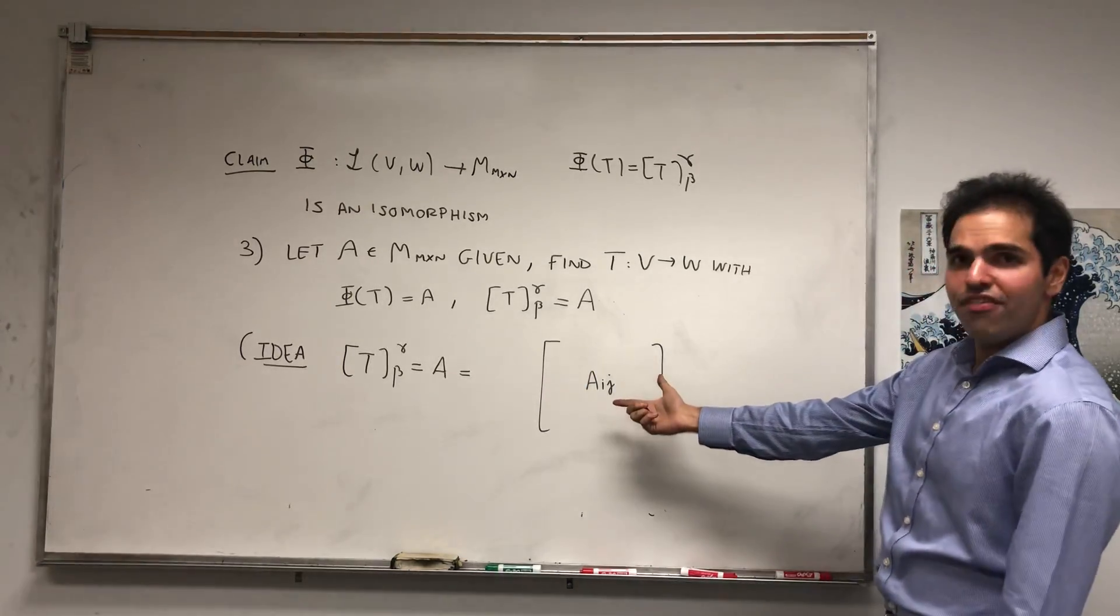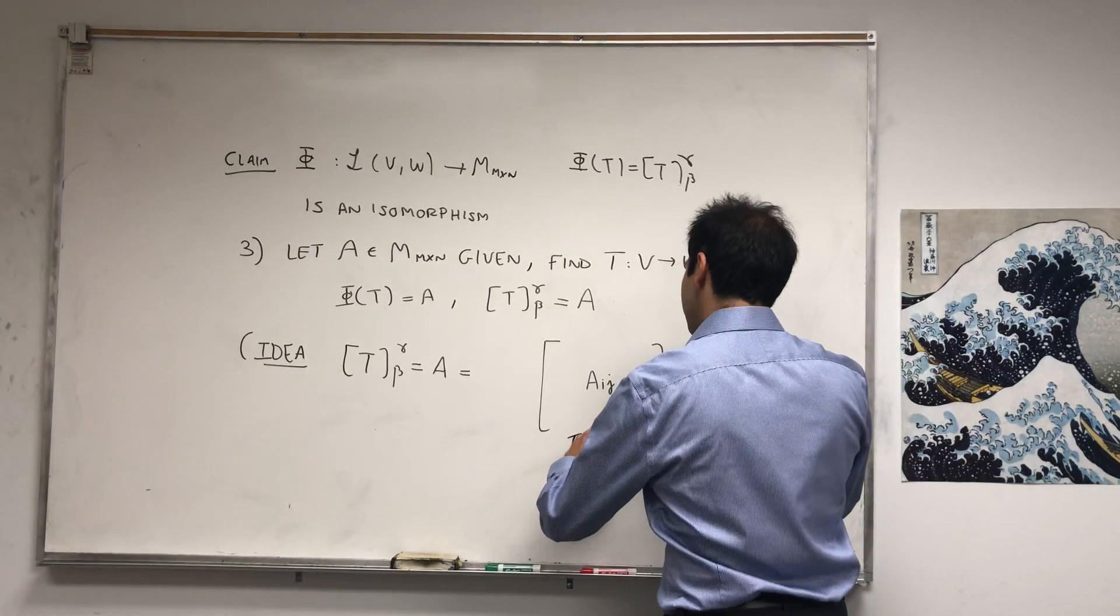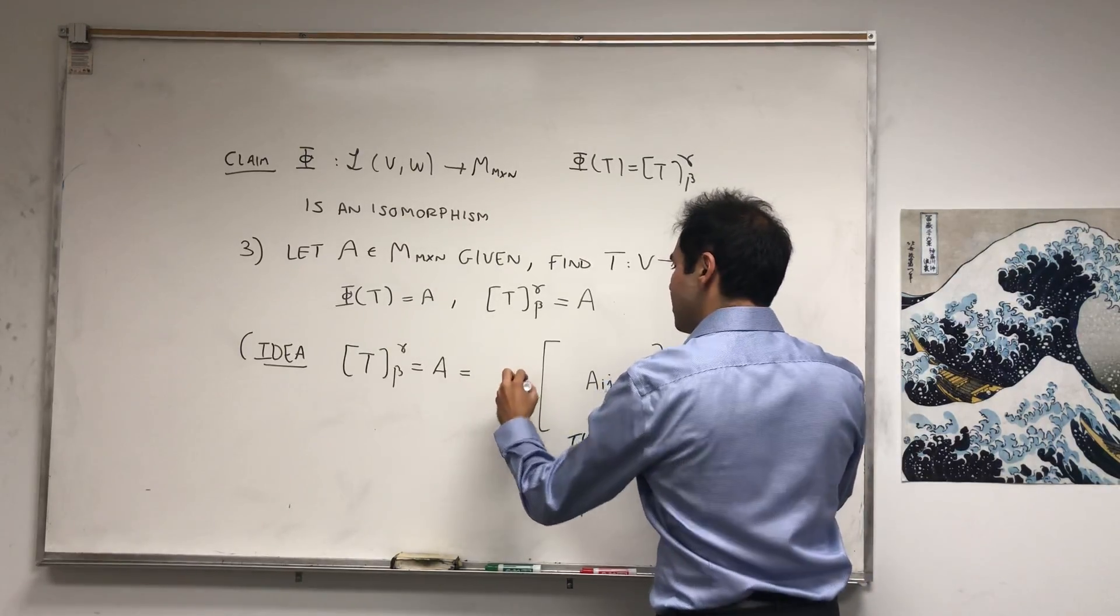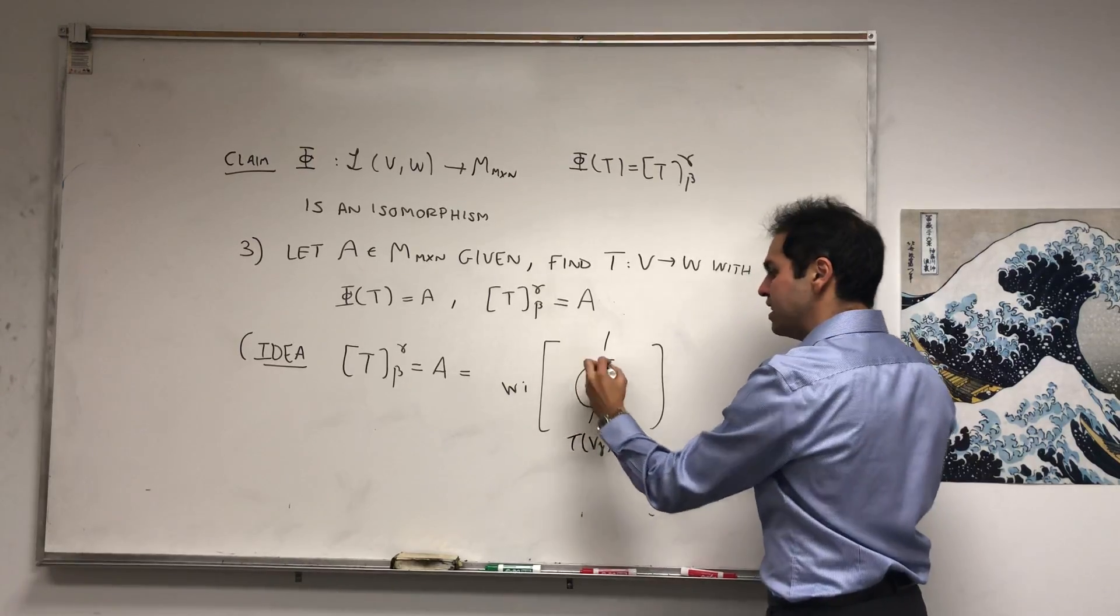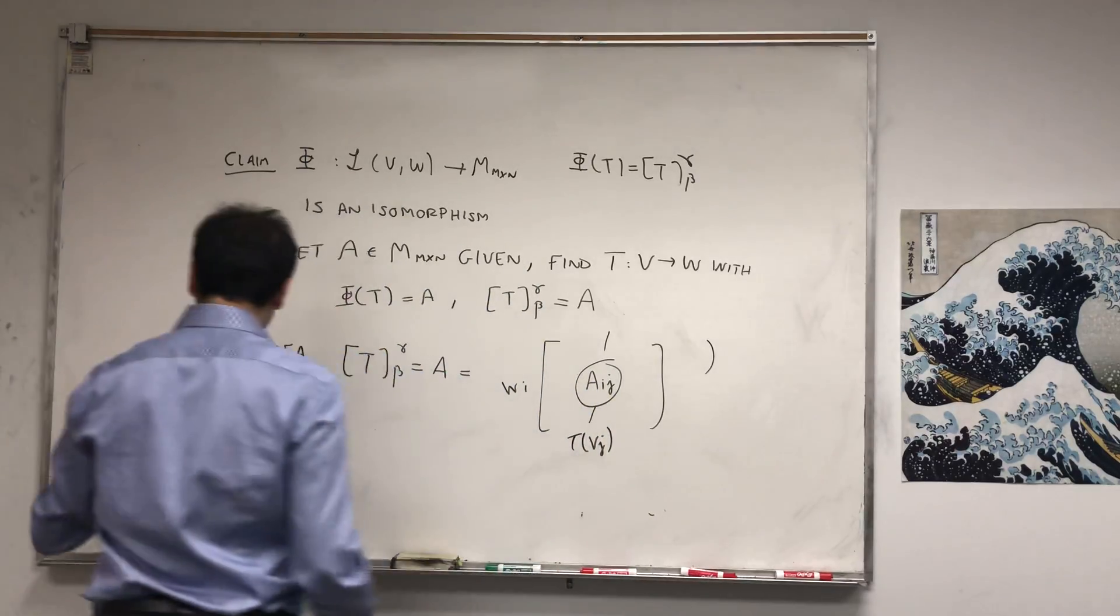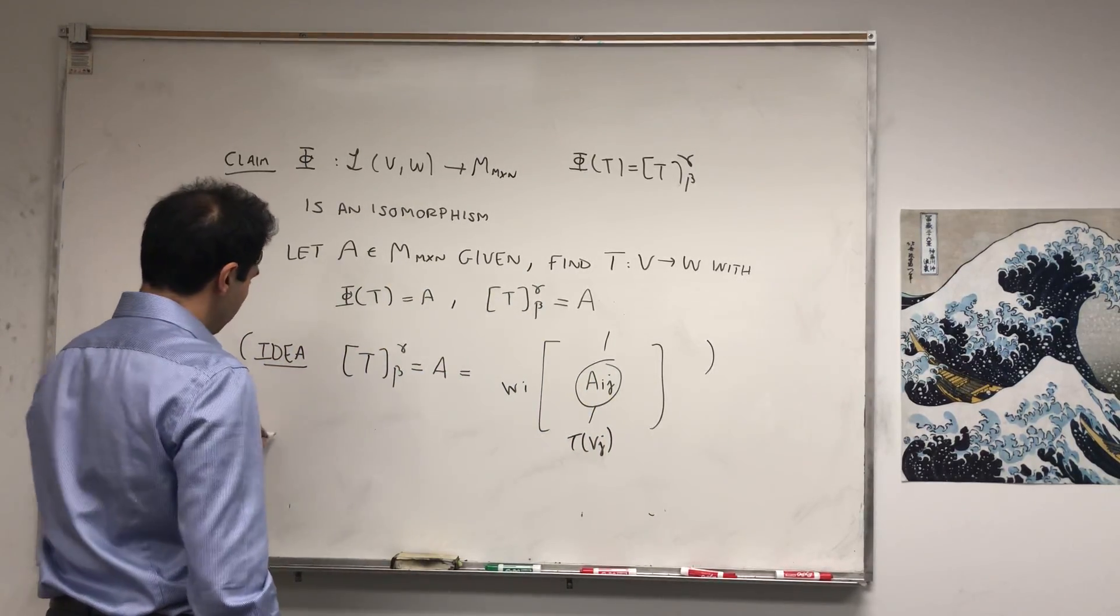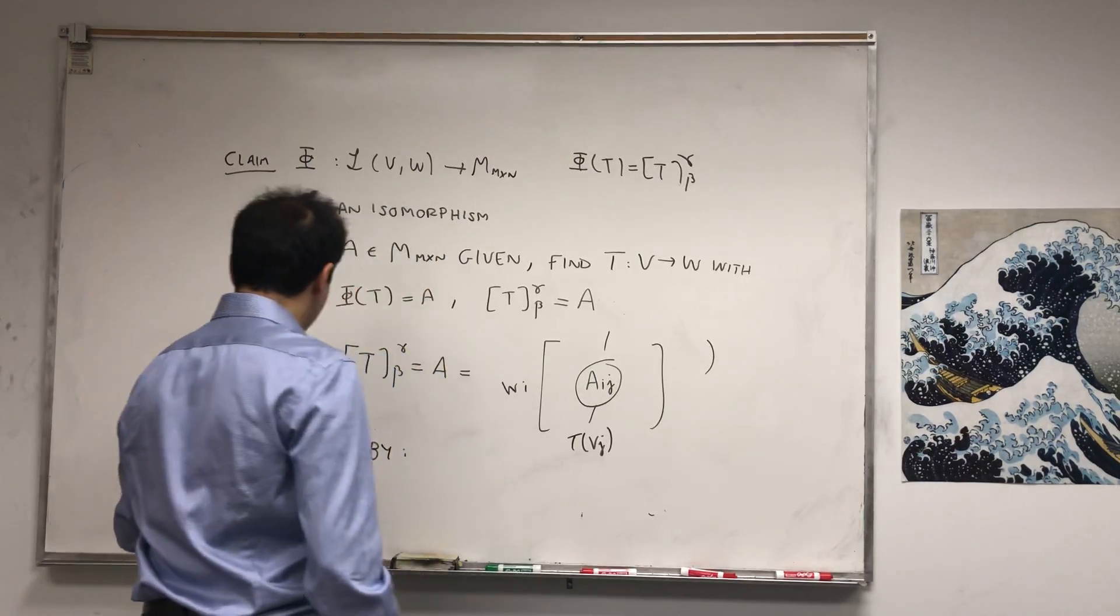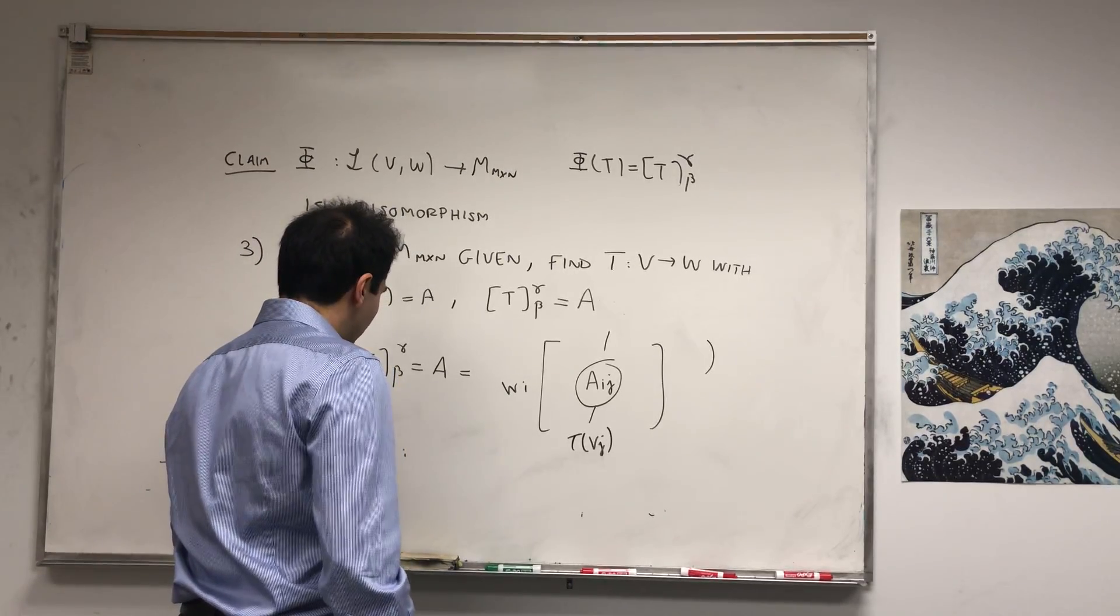But now what's the definition of a matrix? It means if you evaluate T at the j-th basis vector and you write this in terms of your outputs, then the i-th entry should be precisely a_ij.